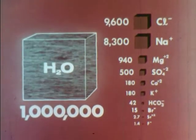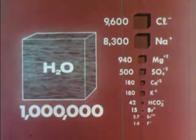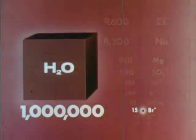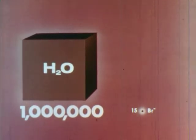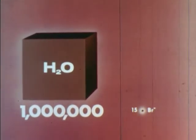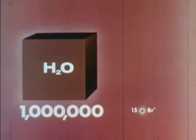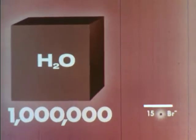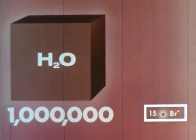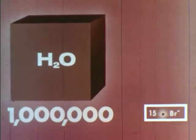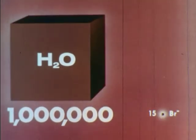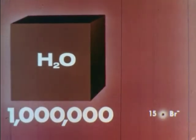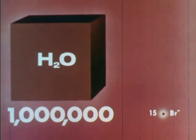One of the chemicals needed in ever-increasing quantities is elemental bromine, yet it occurs in seawater in the form of bromide ions in only very minute concentration — 15 ions per million molecules of water. How can the element bromine be extracted economically from seawater?